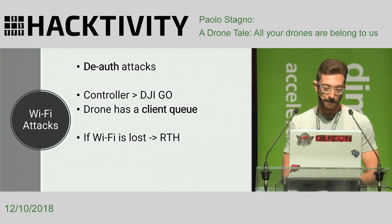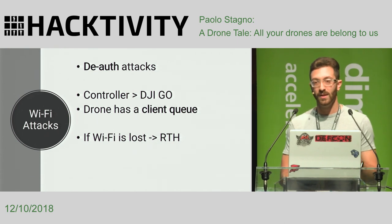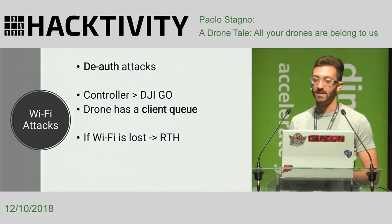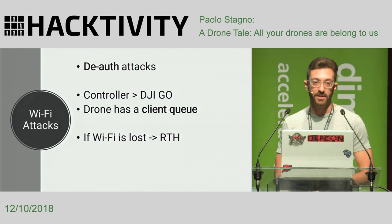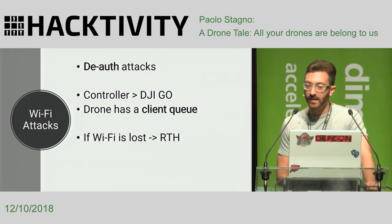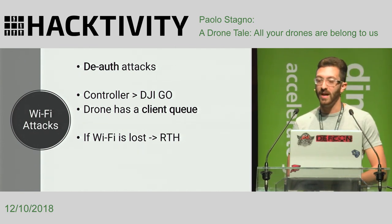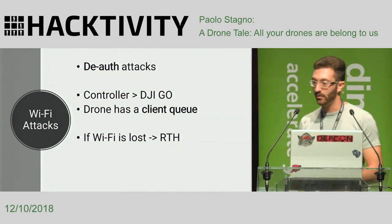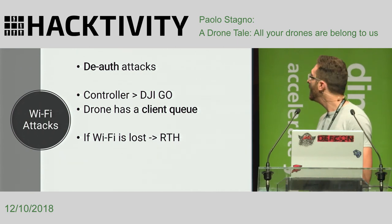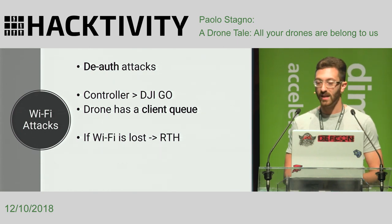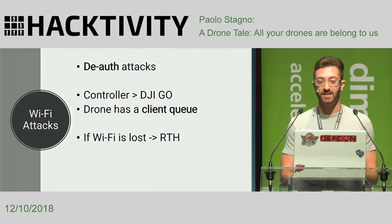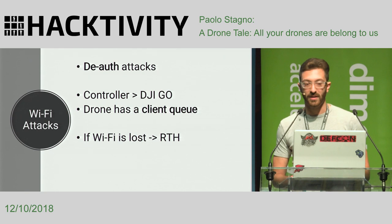Return to home consists of bringing the drone to a predetermined altitude — by default 30 meters from the ground — and then flying in a straight line to the last GPS point set as the home point. This functionality cannot be used without GPS. What happens if we try to add a new device into the existing network? The aircraft maintains a queue of devices, and the queue gives priority to the first connected phone. If we disconnect the first connected phone, the second one can connect and use the application functionality. If we use mobile phone and ground controller at the same time, the ground controller still has priority.